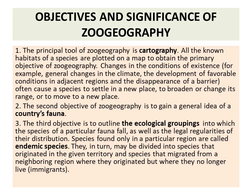The objectives and significance of zoogeography: the principal tool of zoogeography is cartography. All the known habitats of a species are plotted on the map to obtain the primary objective. Changes in conditions of existence, such as general changes in climate, development of favourable conditions in adjacent regions, and disappearance of barriers often cause a species to settle in a new place or broaden its range. The second objective is to gain a general idea of a country's fauna, and the third is to outline the ecological groupings and legal regularities of its distribution.